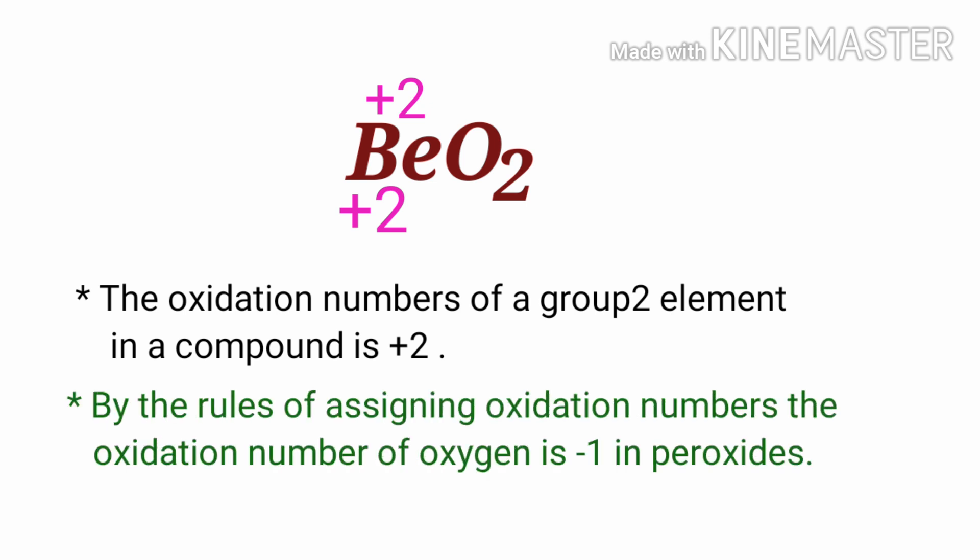By the rules of assigning oxidation numbers, the oxidation number of oxygen is -1 in peroxides. In this compound, two oxygen atoms are present, so the total oxidation number of oxygen is -2.